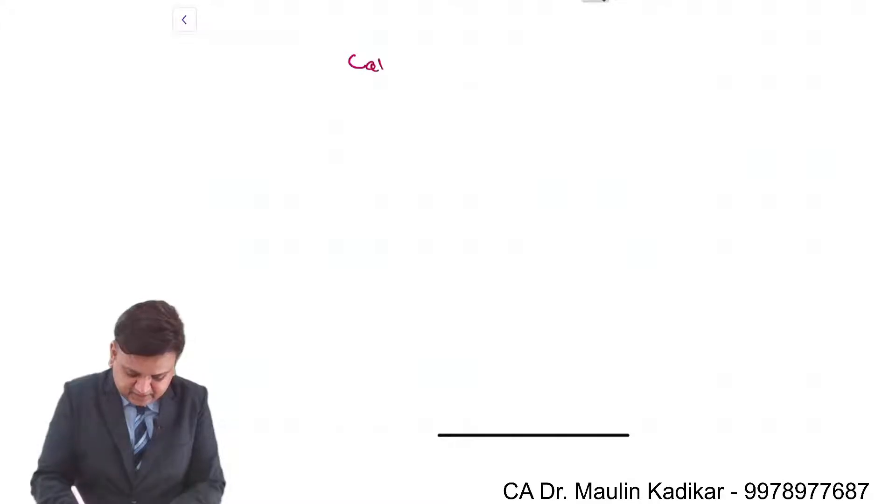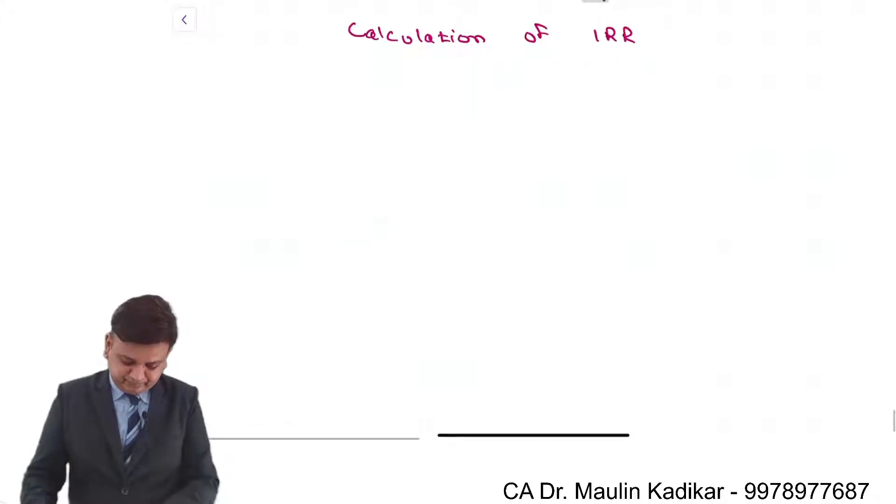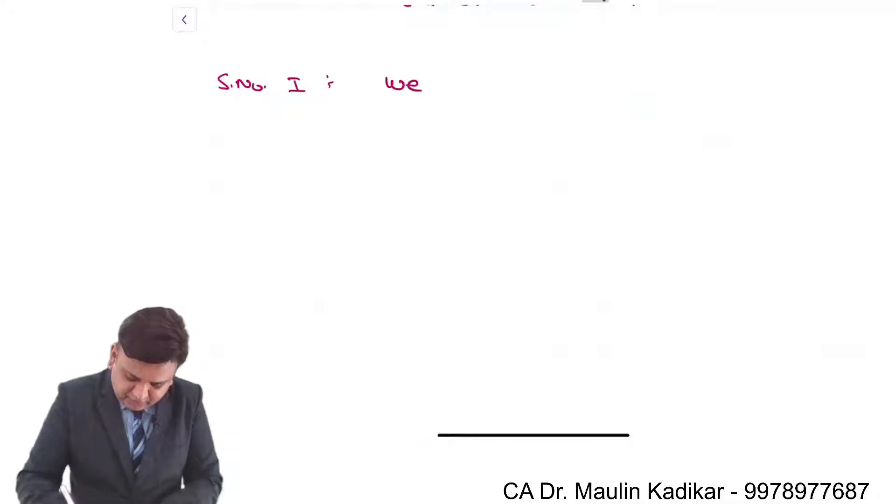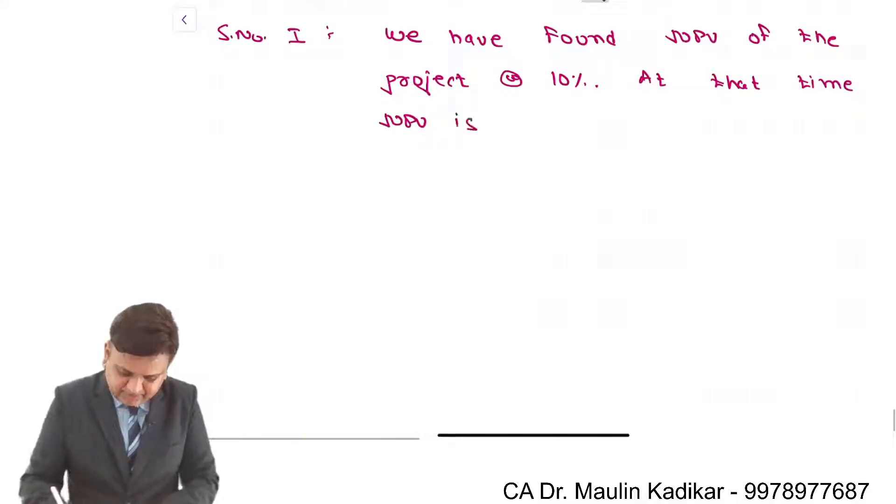So now heading right down calculation of IRR. In the breakdown step number 1, we have found NPV of the project at the rate 10%. At that time NPV is positive.